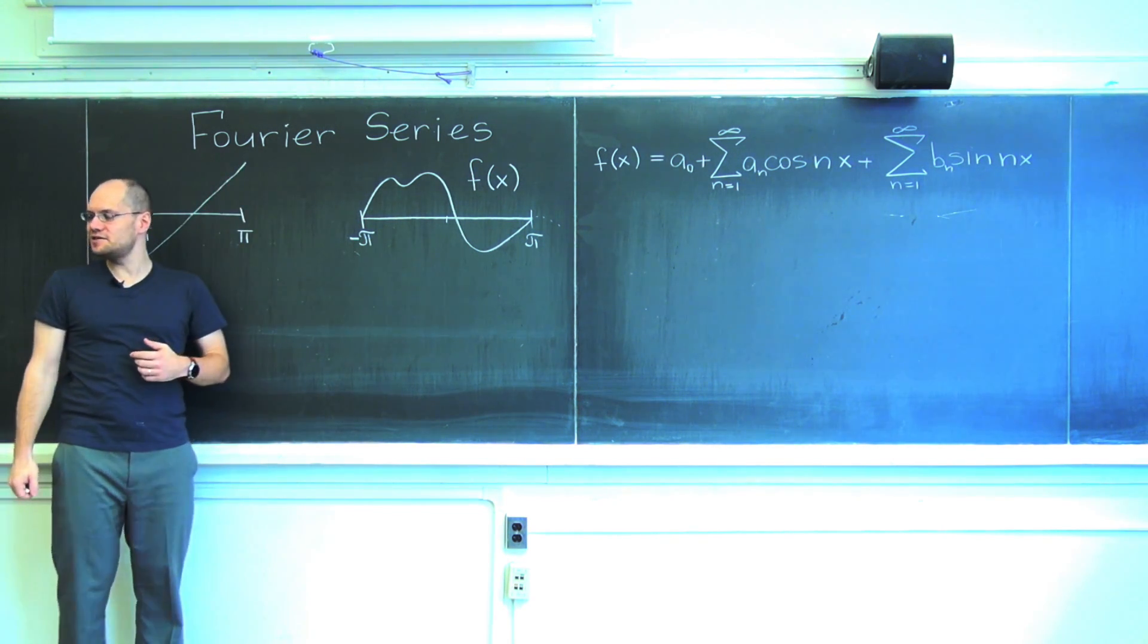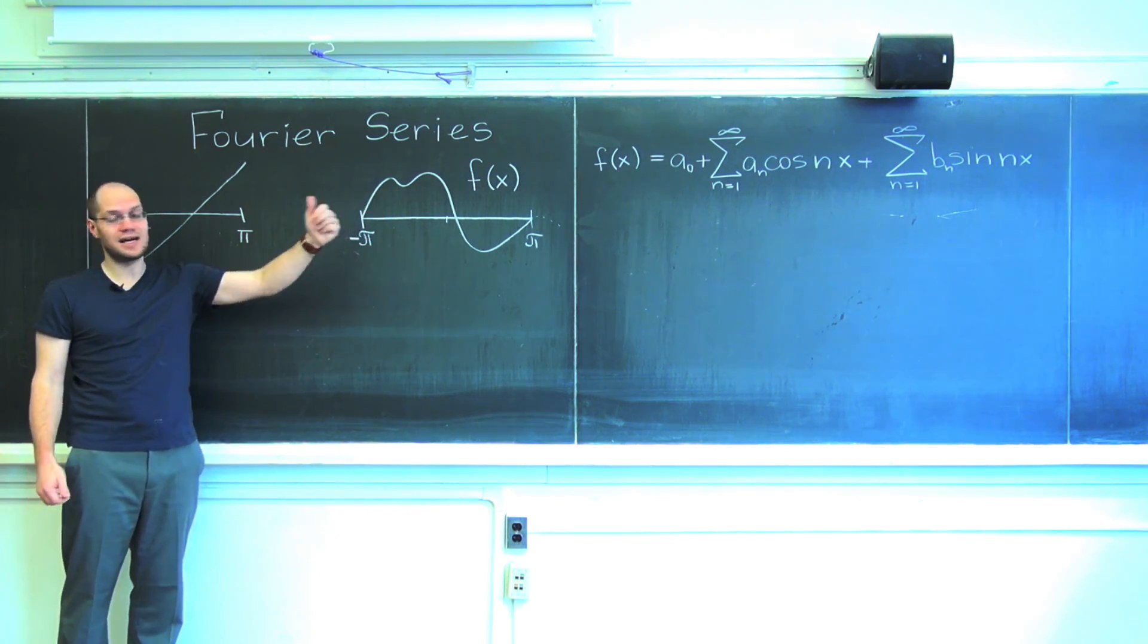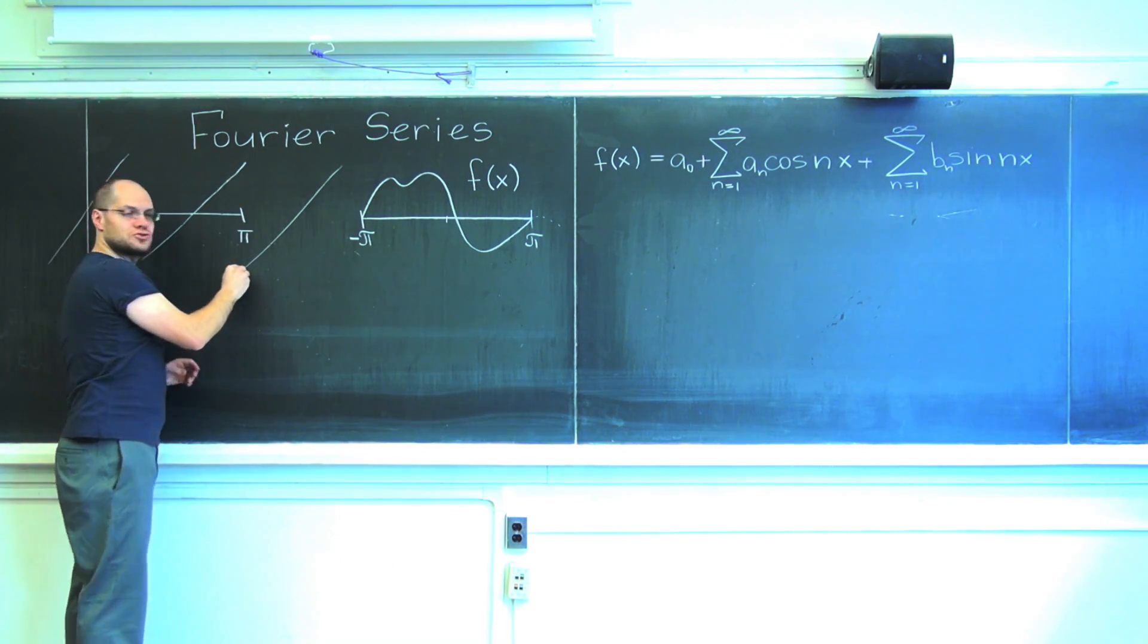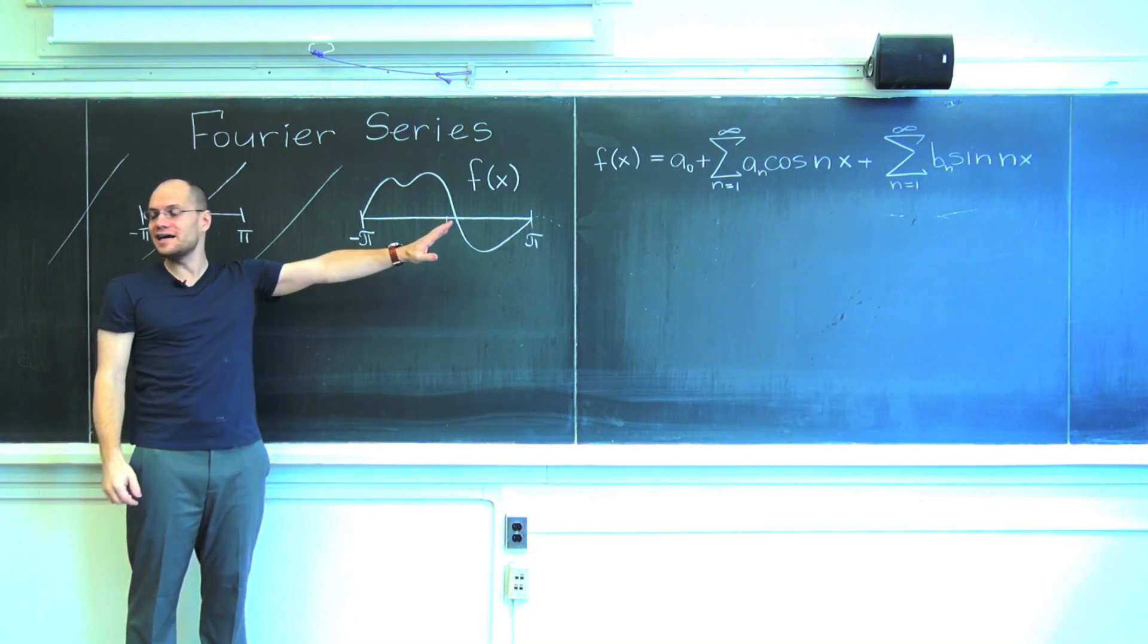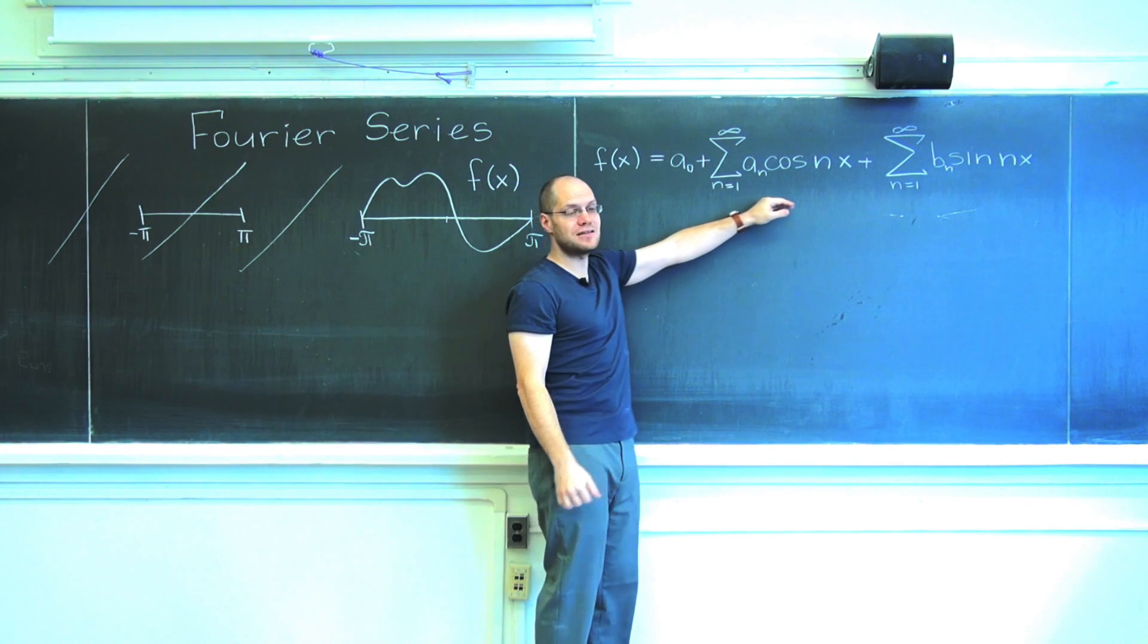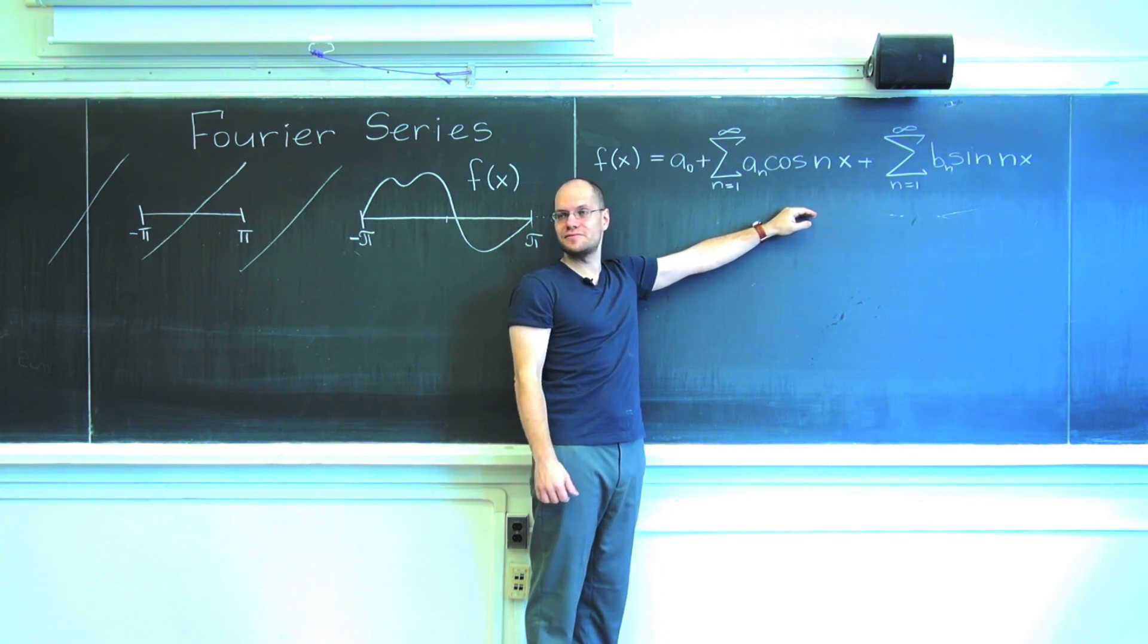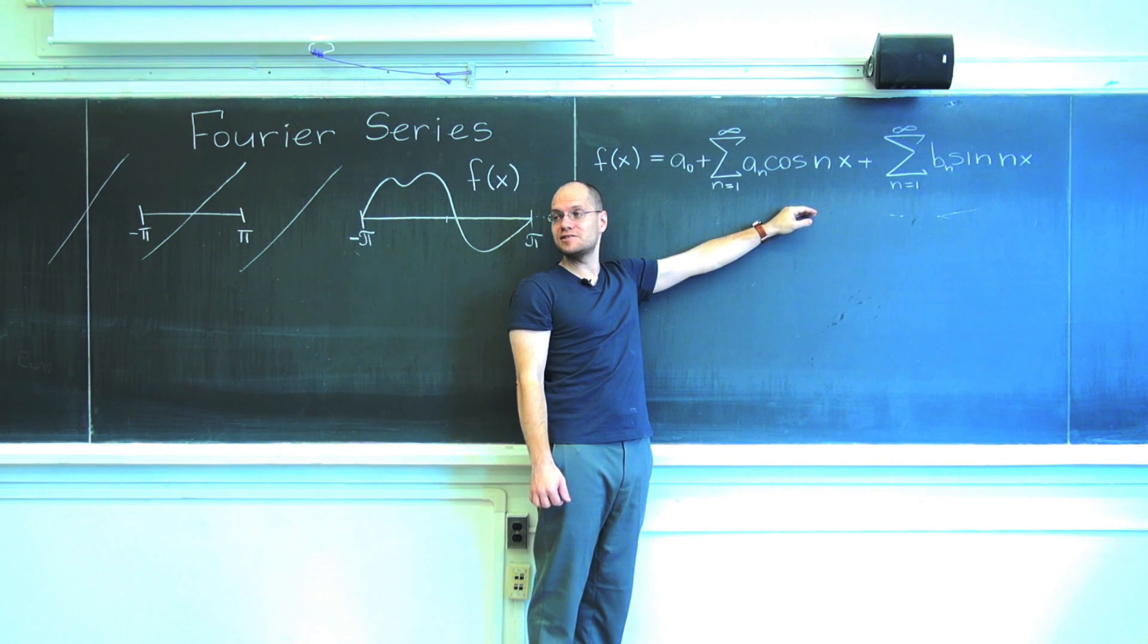And here is f of x equals x. Perfectly nice continuous function. But if you represent it in terms of these periodic sines and cosines, you're really representing this. And so it will be this drop. And you will say, well, that's the reason why this is impossible. Because how can these perfectly smooth functions represent another function that's not continuous, let alone differentiable? It's just not continuous. How is that possible?